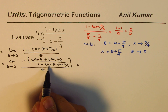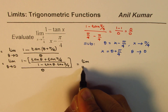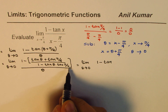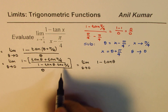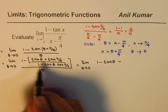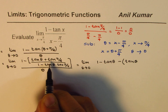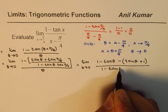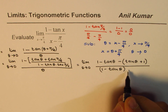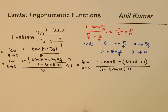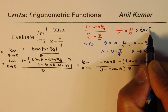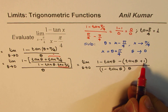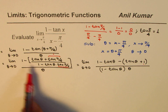Let's simplify further by taking the common denominator. Since tan(π/4) = 1, the numerator becomes 1 times (1 - tan θ) minus (tan θ + 1), which gives 1 - tan θ - tan θ - 1. The denominator of the combined fraction is (1 - tan θ), and the whole expression is divided by θ.